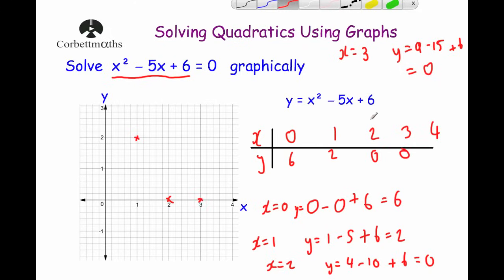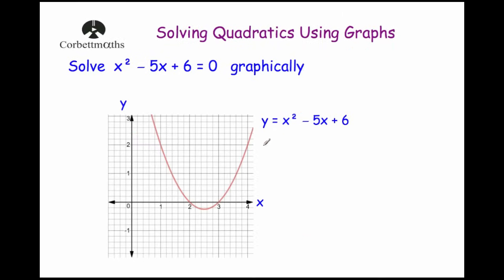Finally, for x equals 4: y equals 4 squared, which is 16, minus 20 plus 6, which equals 2. So our last coordinate is (4, 2). We then draw the curve through those points — here's the graph of y equals x squared minus 5x plus 6.